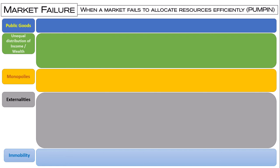We're going to go through some of the key theory in this video for market failures. First, define what public goods are and identify their characteristics. Hopefully you have that they are a missing market, therefore they are a complete market failure due to their characteristics, which are that they are non-rejectable, non-rival in consumption, and non-excludable.